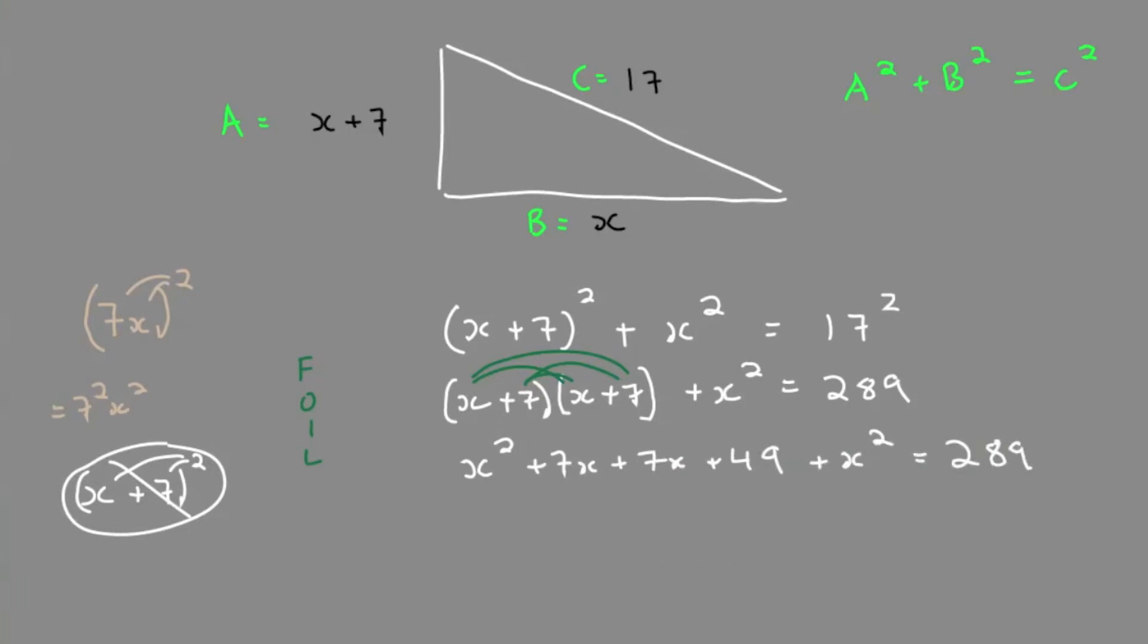Next, we collect like terms. So that would be x squared terms, x terms, and numbers. We get 2x squared plus 14x. Move the number 289 to the left side, and it becomes negative. 49 minus 289 is negative 240 equals 0.